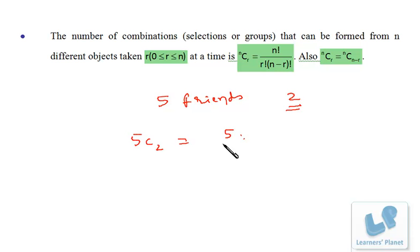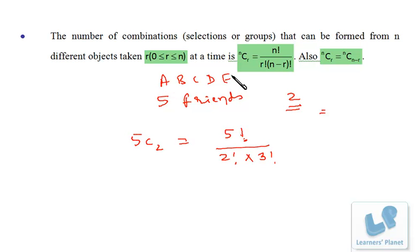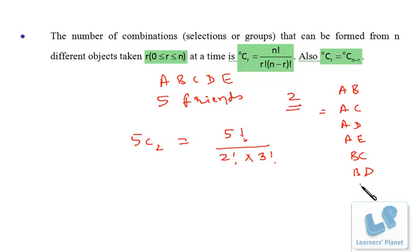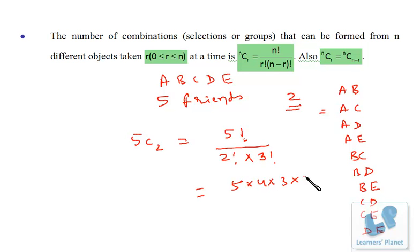5C2 is five factorial divided by two factorial into (5 minus 2) factorial, which is five factorial by two factorial into three factorial. If we label five friends as A, B, C, D, E — as done in previous examples — we get ten combinations: AB, AC, AD, AE, BC, BD, BE, CD, CE, and DE. So ten combinations in total.